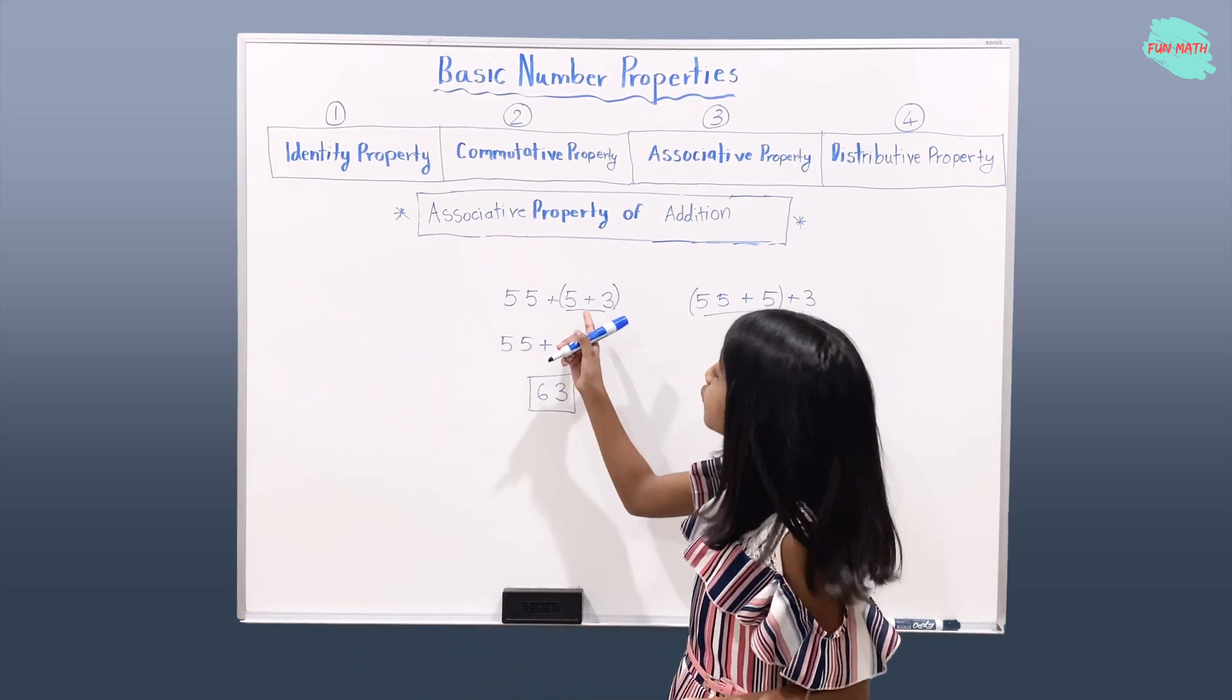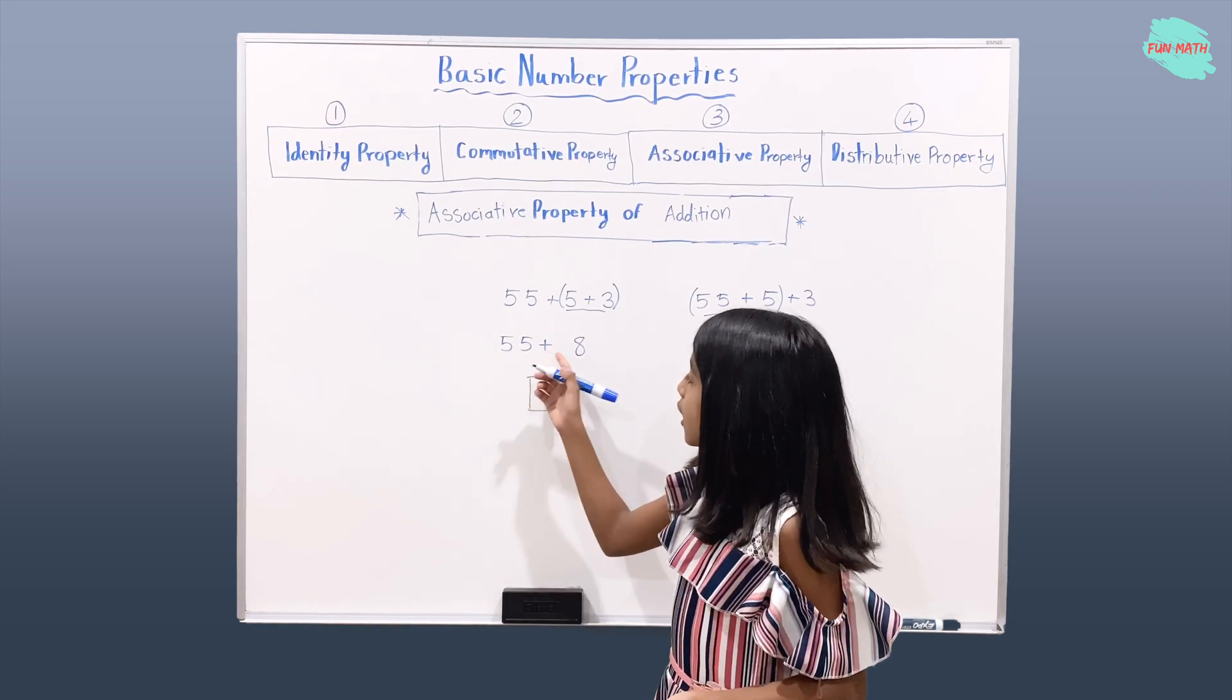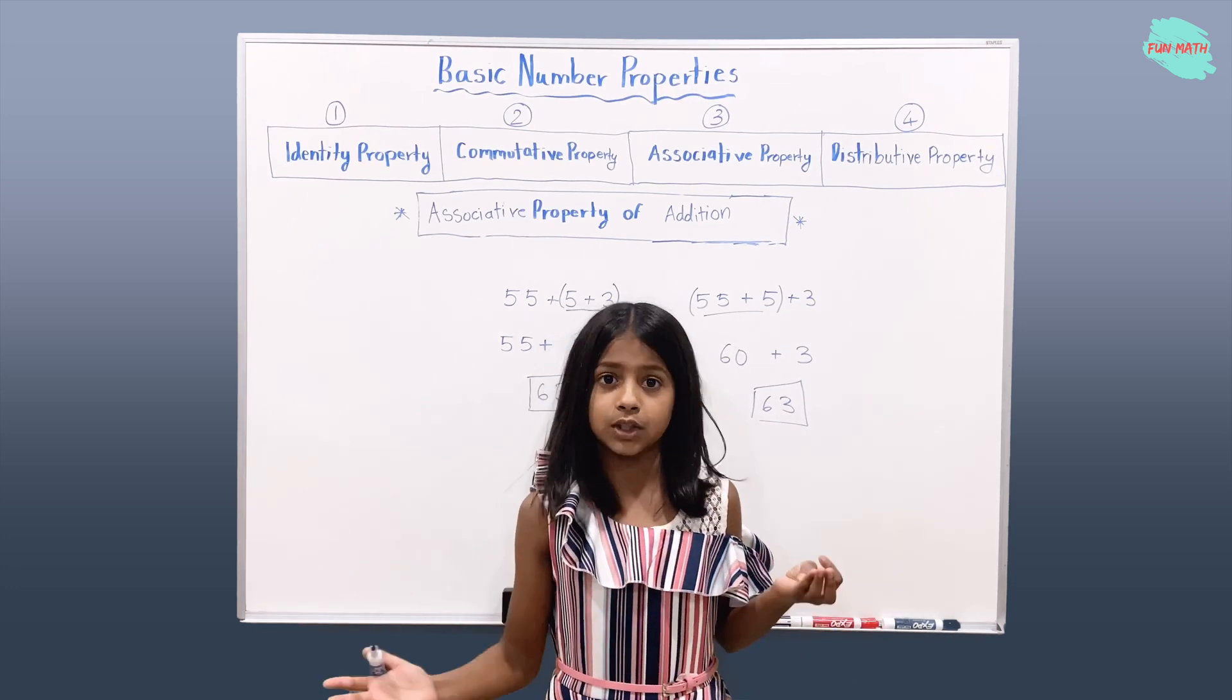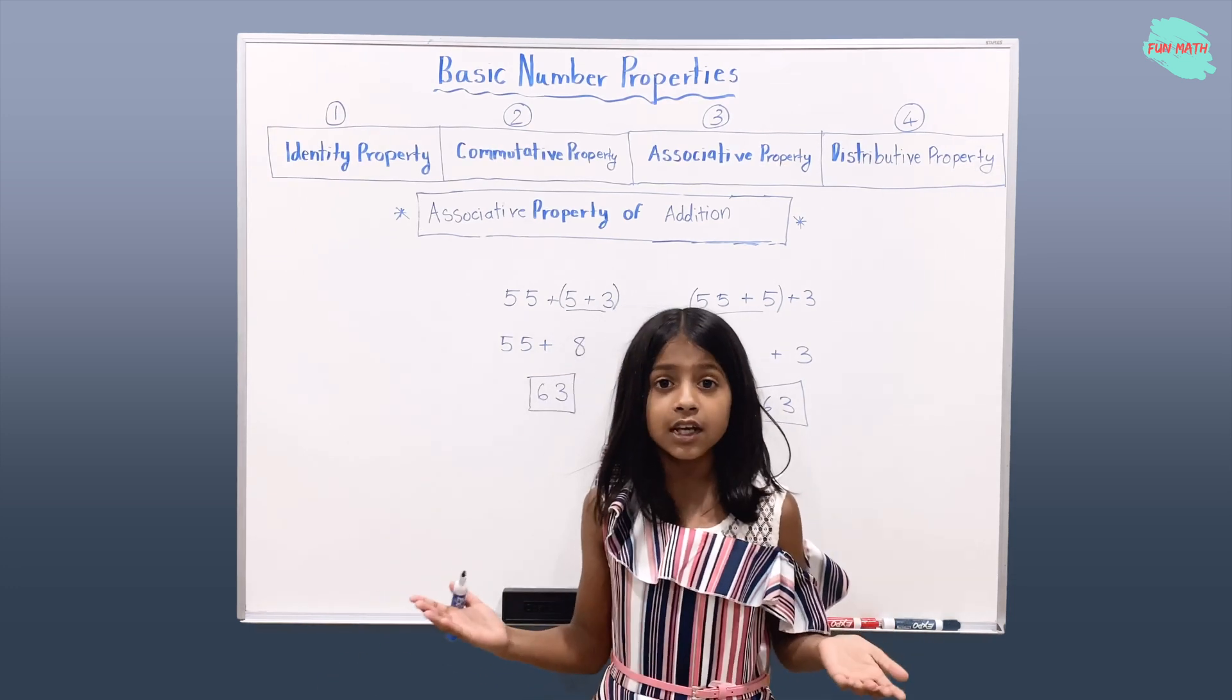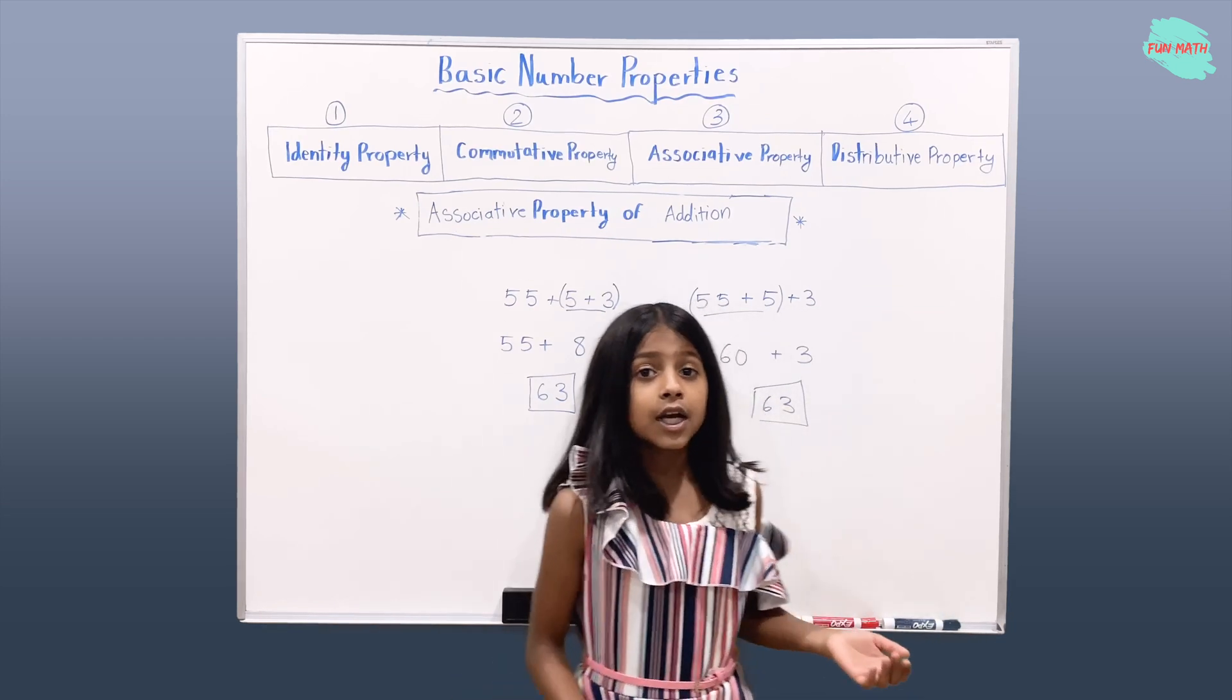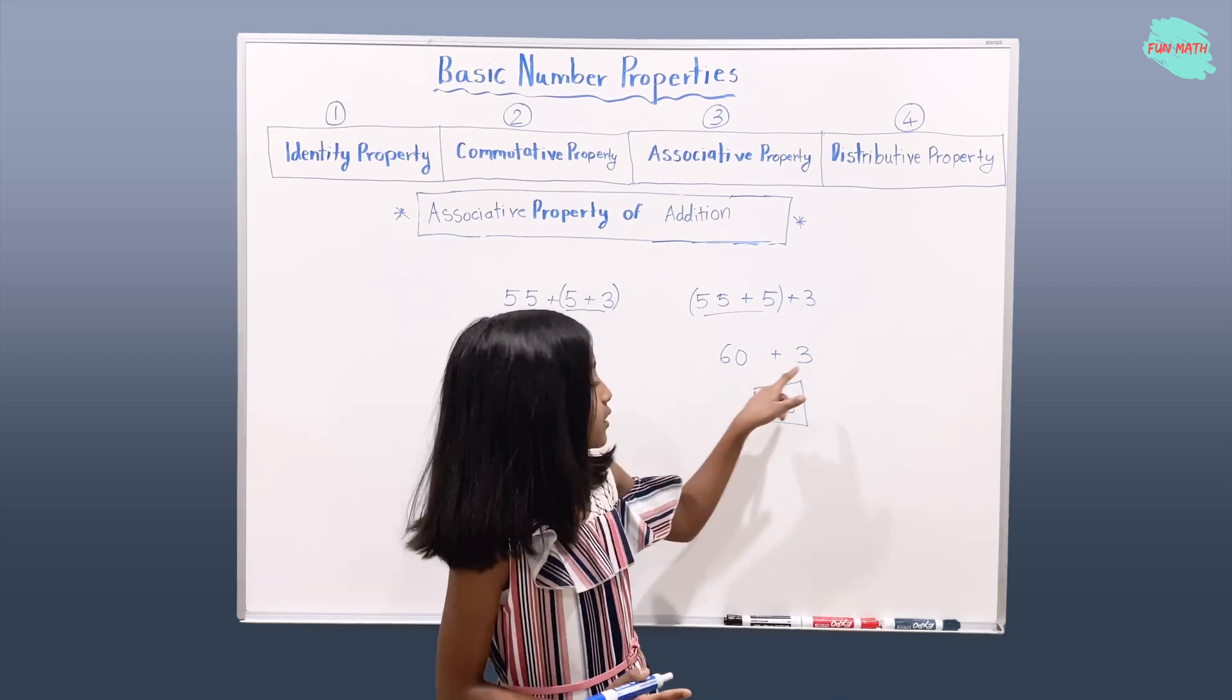If you solve 5 plus 3 it will give you 8. And if you add 55 and 8, it will give you 63. But they're still the same numbers. But if you see here, both of these are easy to solve. But 60 is a round number, so it's easy to solve 60 plus 3.